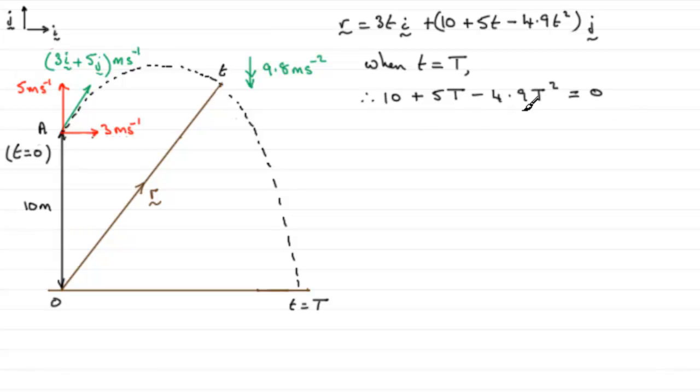Now with something like this I'm not going to hang around to see if it factorizes. So quadratic equation, it's got a negative here, I want to multiply throughout by minus one, so I'm going to have 4.9T² - 5T - 10 = 0.